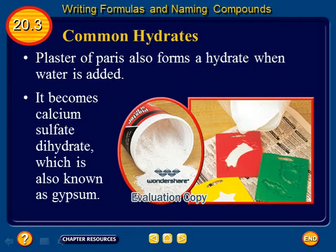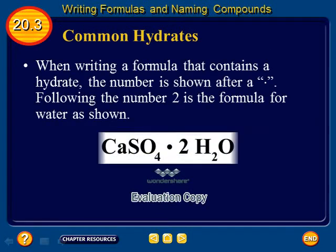Although there isn't much in our classroom, gypsum is common wallboard. When writing a formula that contains a hydrate, the number of water molecules is shown after a dot, followed by the formula for water. For example, calcium sulfate combined with two parts water is written as CaSO₄·2H₂O.